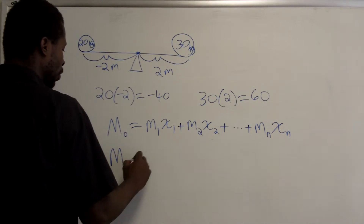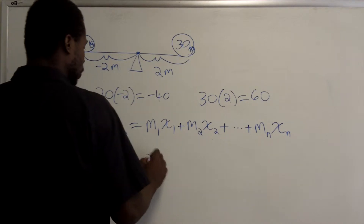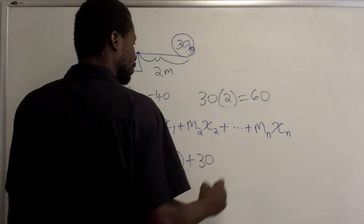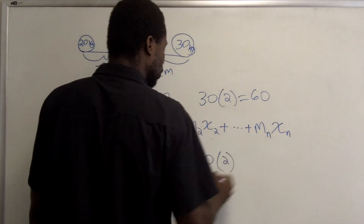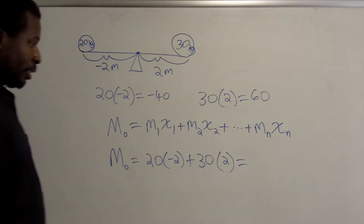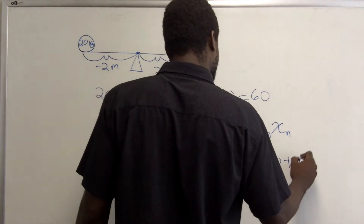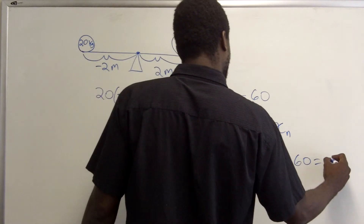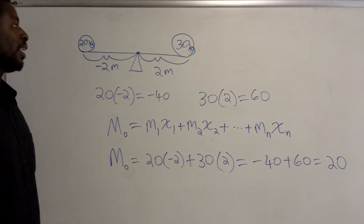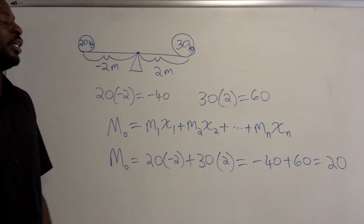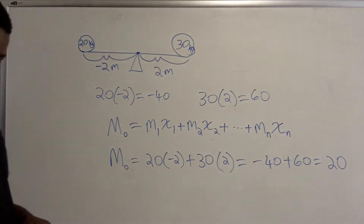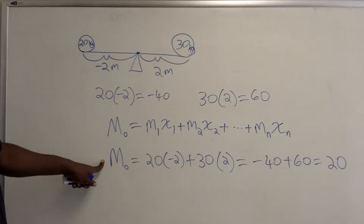For our particular problem, the moment about the origin is: the first mass is 20 and its moment arm is negative 2, plus the second mass is 30 and its moment arm is positive 2. That calculation gives negative 40 plus 60, so the moment about the origin is 20. Since it does not equal zero, this system has a tendency to rotate — in this case, clockwise.